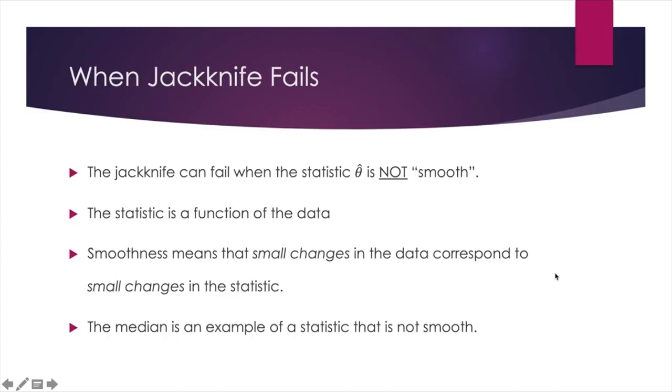It is worth noting that the Jackknife can fail when the statistic is not smooth. Remember we have mentioned earlier that the statistic is a function of the data. Smoothness means that small changes in the data correspond to small changes in the statistic. The median is an example of a statistic that is not smooth. So let's demonstrate in R that if we use Jackknife method to estimate median, it's not going to work.